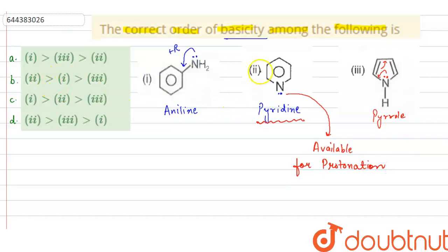So here the basicity of second will be highest and if you see we have two options B and D in which basicity of 2 is highest. So it means option A and C will be wrong.